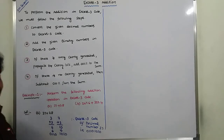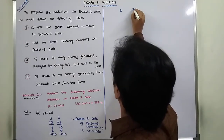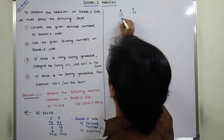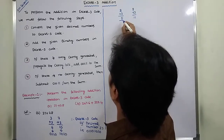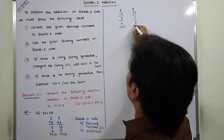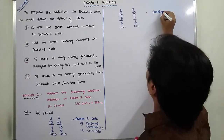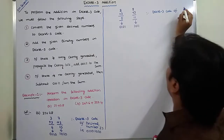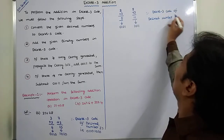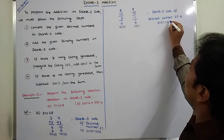For each digit we add plus 3. Similarly for 28: digit 2 plus 3 equals 5, binary equivalent is 0101. Digit 8 plus 3 equals 11, binary equivalent is 1011. Therefore, XS3 code of decimal number 28 is 0101 1011.